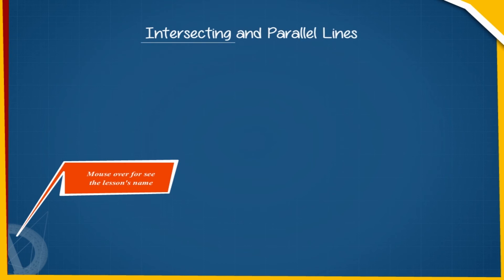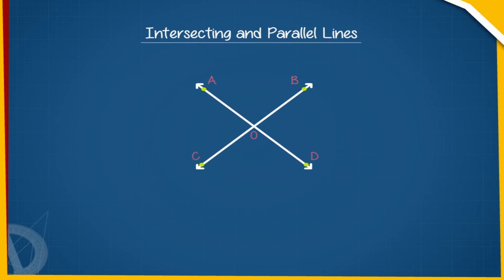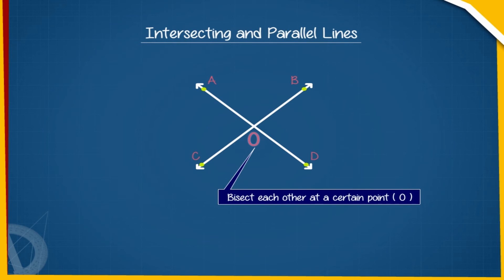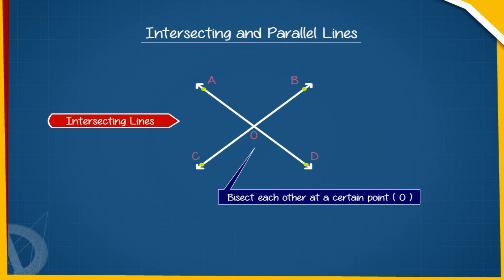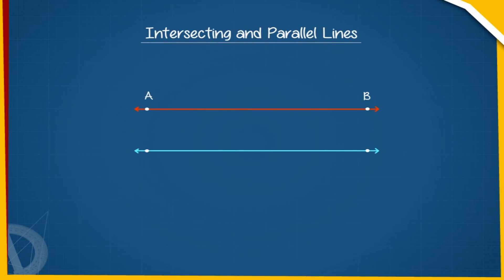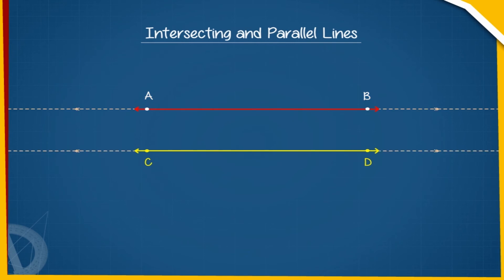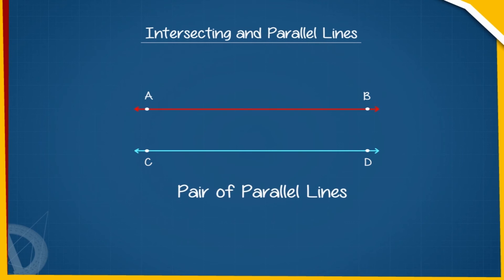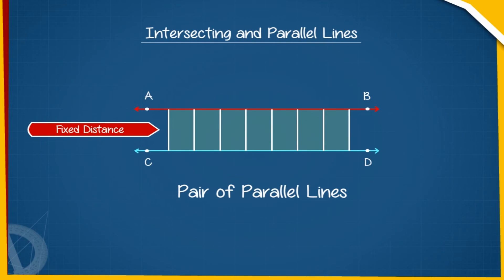Intersecting and parallel lines. A cross is simply a pair of lines that cut or bisect each other at a certain point. In the shown pair of lines, AD and BC intersect each other at point O — these are called intersecting lines. Lines AB and CD do not cut or meet each other at any point and move on endlessly. Such a pair of lines is known as parallel lines; they always keep a fixed distance from each other.